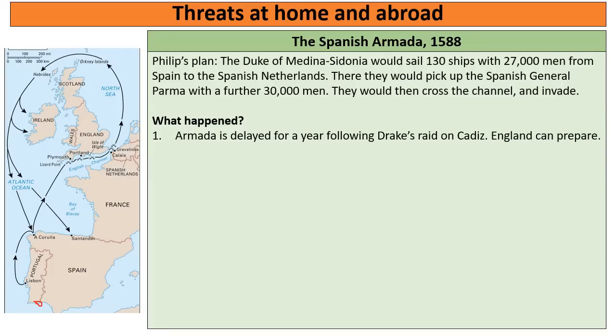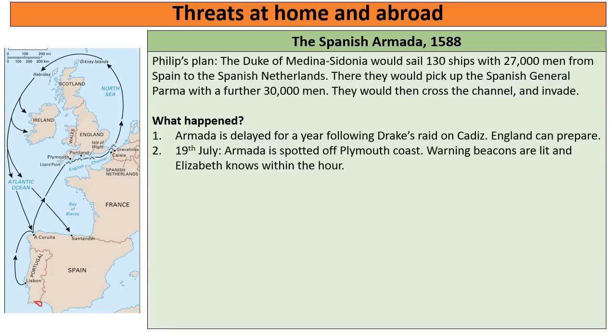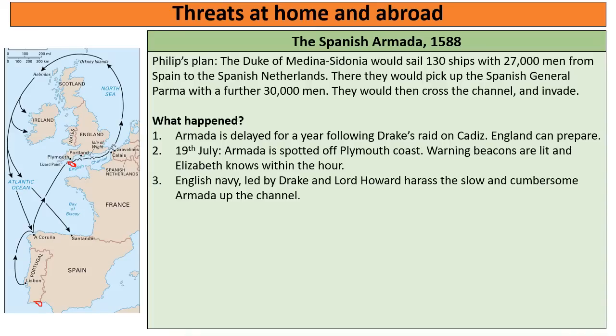When the Armada was ready to sail in 1588, it was spotted off the coast of Plymouth on the 19th of July. Because of the preparation Drake had given Elizabeth, fire beacons had been set up all along the south coast of England, and so within one hour Elizabeth knew the Armada had arrived. This allowed her to act through effective communication. The English Navy, led by Drake and Howard, chased the Armada up the Channel.